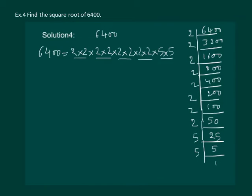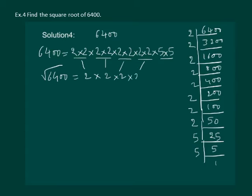That means the square root of 6400 equals one 2 from the first pair, multiplied by another 2 from the second pair, another 2 from the third pair, another 2 from the fourth pair, and a 5 from the pair of 5s. This is equal to 80.